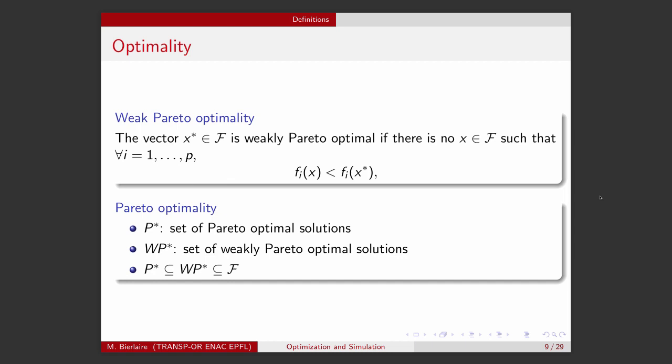Another concept that can be considered is the concept of weak Pareto-optimality. In this case, a vector X-star, a feasible vector X-star, will be said to be weakly Pareto-optimal if there is no feasible solution that improves all the objectives of the problem. And the two concepts are related, so it's a weaker version of Pareto-optimality. If we denote by P-star the set of Pareto-optimal solutions of the problem, by WP-star the set of weakly Pareto-optimal solutions of the problem, then we have this relationship that P-star is included in WP-star, which is included in the set of feasible solutions. So, it means that all the Pareto-optimal solutions are weakly optimal, but not in the other direction.